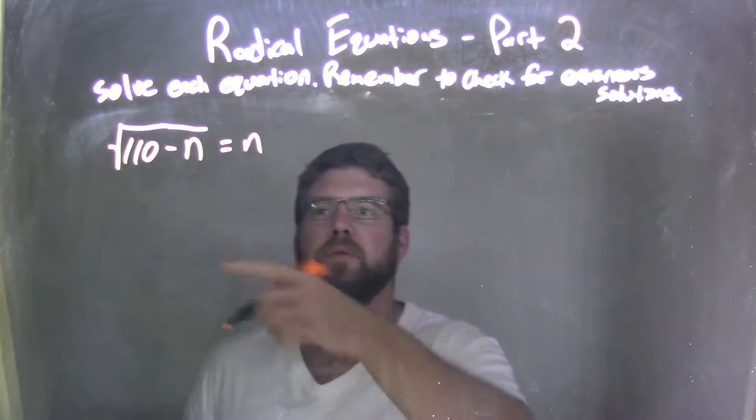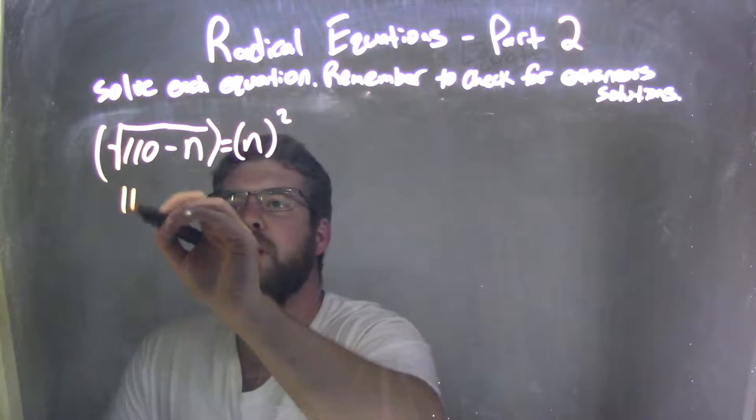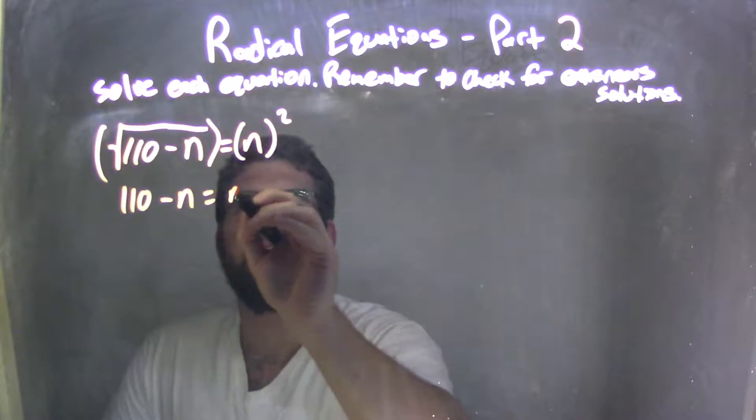Well, I want to eliminate the square root, so I'm going to square both sides. In squaring both sides, I'm left with 1/10 minus n equals n squared.